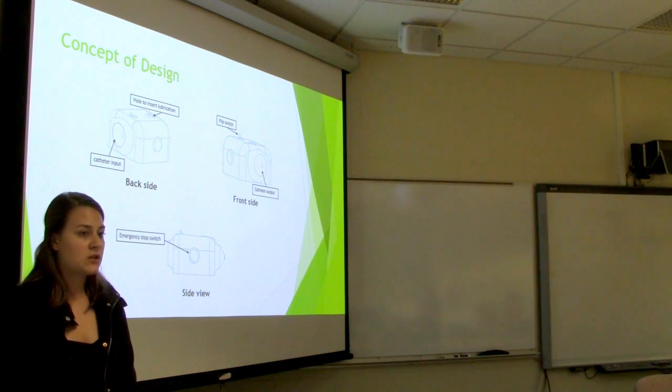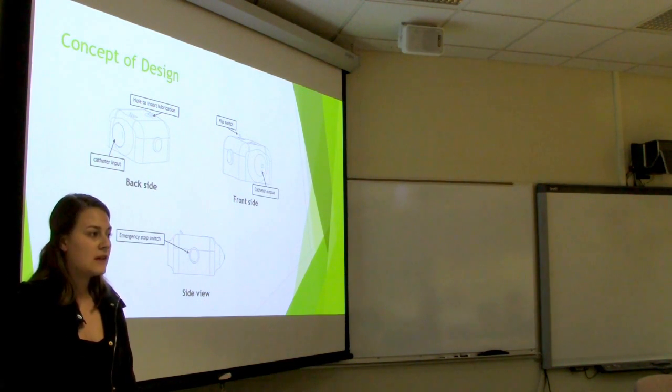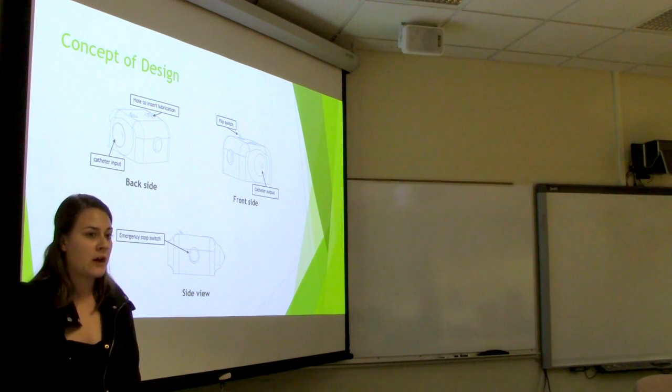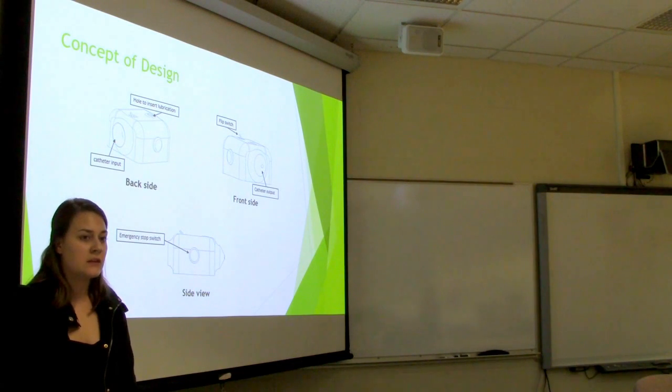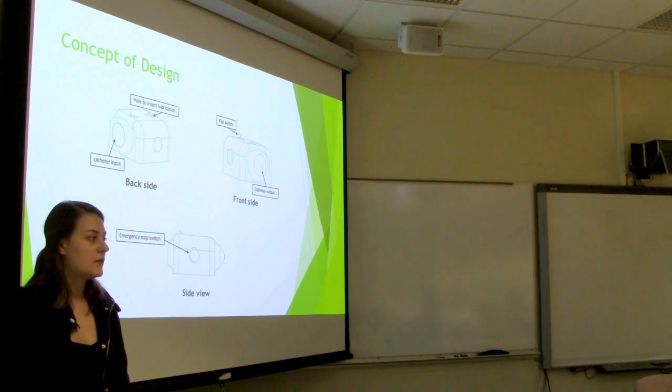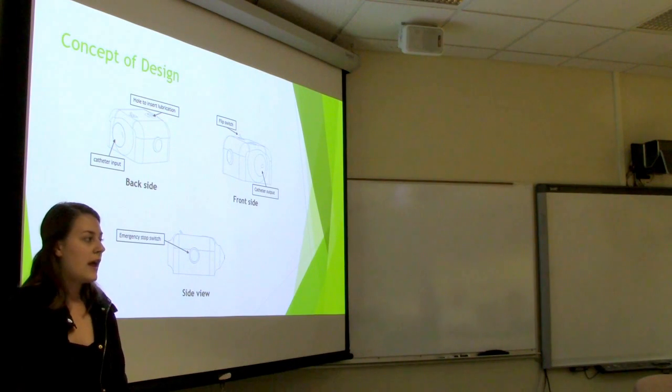There's also an emergency stop switch on the device. And this is because different blockages may be hit when somebody is inserting a catheter. And when these blockages are hit, it's important to adjust the catheter as necessary to prevent internal bleeding or internal damages from occurring. So this switch just provides a quick and easy way for the user to quickly shut off the device, ensure it stays off while they're adjusting the catheter, and then a reset switch would be hit to resume the capping process.